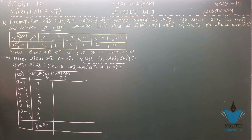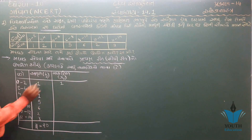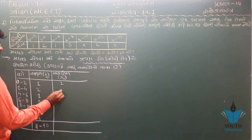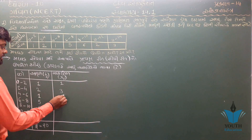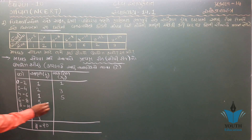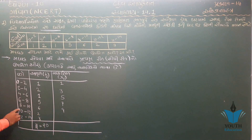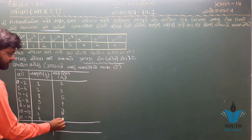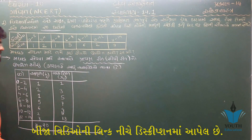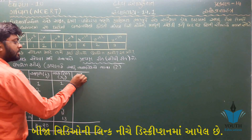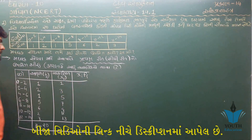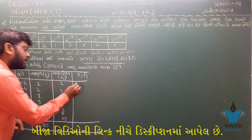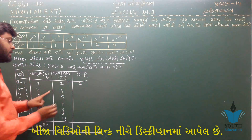આવૃત્તિ (f) ની ગણતરી: 2, 2, 2, 1, 2, 2, 3, 2, 2, 2, 2, 2, 3, 2, 2, 3, 3, 2, 1, 1, 1, 1, 1, 3, 2 — આ પ્રત્યેક વર્ગ અંતરાલ માટેની આવૃત્તિઓ છે.